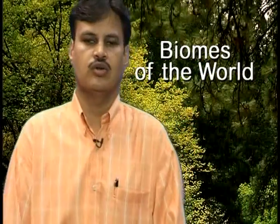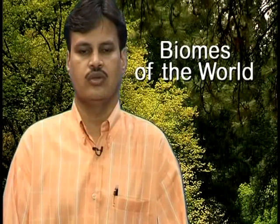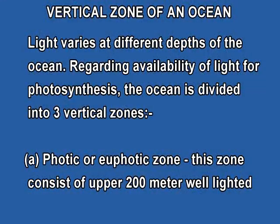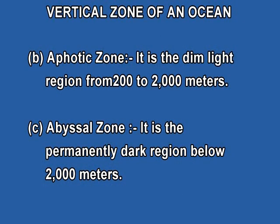Now we will discuss the vertical zones of an ocean. When we move from the surface to the depth of the ocean, we can classify it into three zones based on availability of light. The first zone is the photic zone, also called the euphotic zone — up to 200 meters, it is the well-lighted zone. The second is the aphotic zone, a dim light region from 200 to 2000 meters. The third is the abyssal zone, a permanently dark region with no light and no photosynthesis, below 2000 meters.